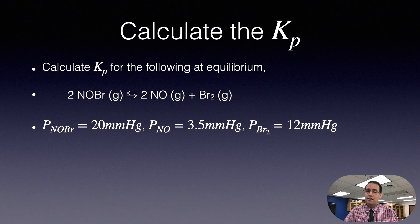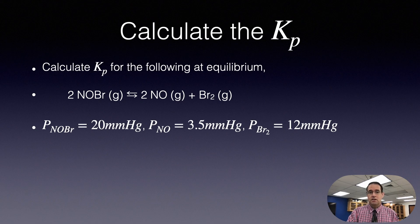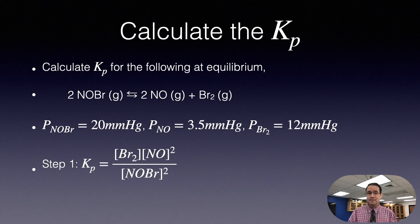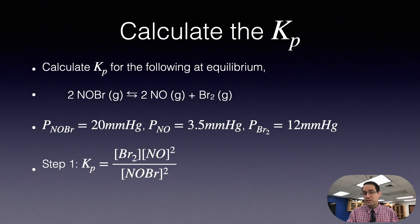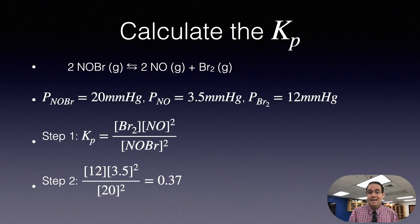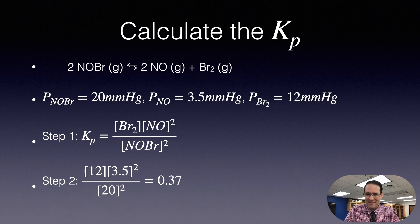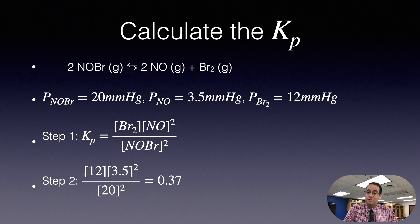Let's go through examples of how to calculate K_p. First, write the expression: K_p equals products over reactants. We have bromine and nitrogen oxide squared — because of the coefficient two — over NOBr squared. Then plug in the pressures. An important note: equilibrium constants have no units. I repeat, they have no units. You just write down a number.